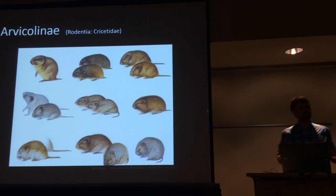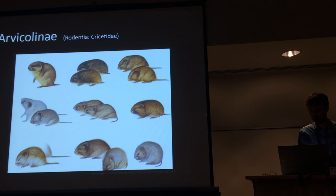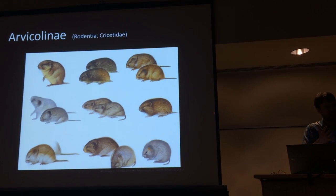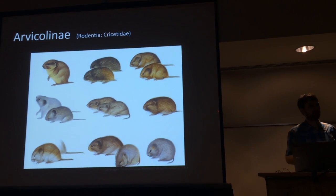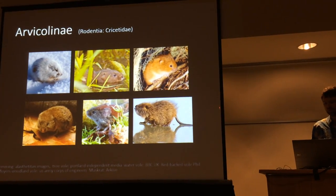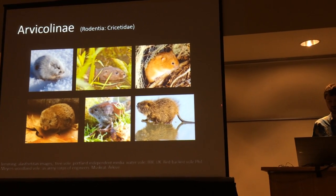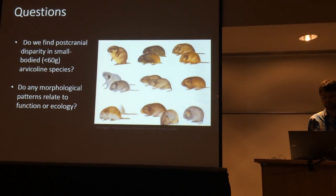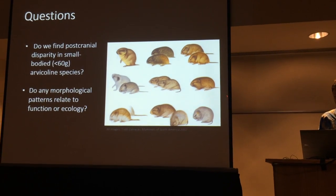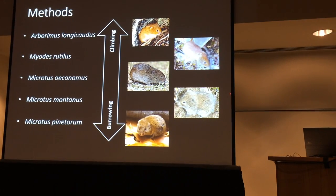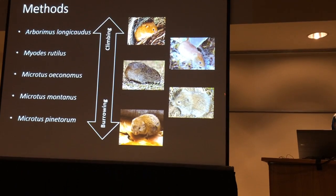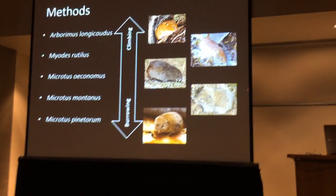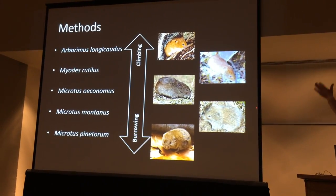Working with voles got me interested in the subfamily Arvicolinae — the rodent family Cricetidae, about 150 species, a pretty rapid radiation. When you look at this group, you don't think variation — these are a lot of round, short-limbed, relatively uninteresting-looking mammals, something that's really easy to pass off as generalists. But in fact they do a lot of different things. We have fully arboreal species, semi-aquatic species, and even some fossorial species across the tree. I selected five species representing a continuum between climbing and burrowing, for which I had access to the full post-cranial skeleton, and for which we have a pretty good idea of what each species is doing.